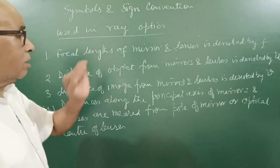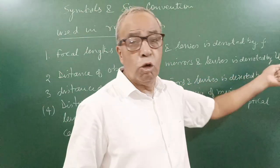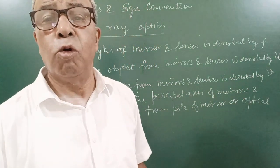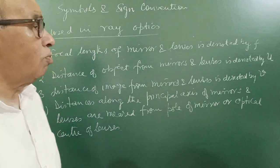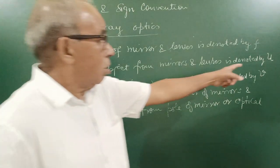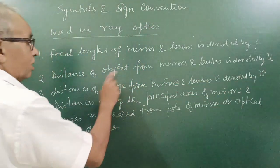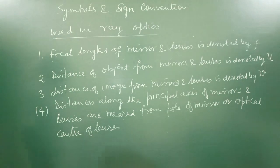Distance of objects from mirrors or lenses is written by small u. We use small u for distance of image from mirror or lenses. Object, sorry. Distance of object from mirror or lenses is written by u. Distance of image from mirror or lenses written by v.